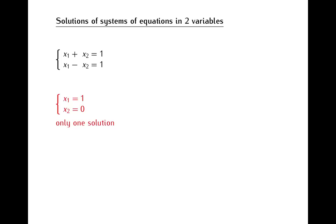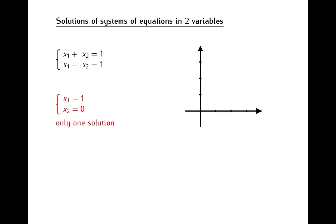Systems of linear equations can be interpreted geometrically, and for systems of equations in two variables, this geometrical interpretation is actually very simple. The basic idea is that if we have a single linear equation in two variables — not a system, but just a single equation — then such an equation has a graph and this graph is some line on the plane. For example, the graph of the first equation in our system is this line, and the graph of the second equation is this line over here.